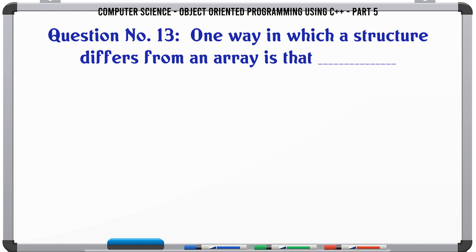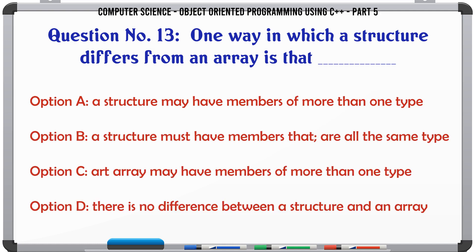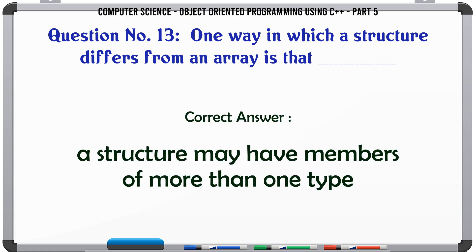One way in which a structure differs from an array is that. A. A structure may have members of more than one type. B. A structure must have members that are all the same type. C. An array may have members of more than one type. D. There is no difference between a structure and an array. The correct answer is: A structure may have members of more than one type.